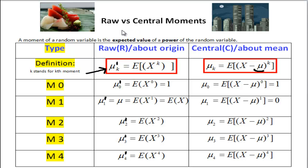In this video we'll discuss the difference between raw and central moments. As a reminder, a moment of a random variable is the expected value of the power of that random variable.